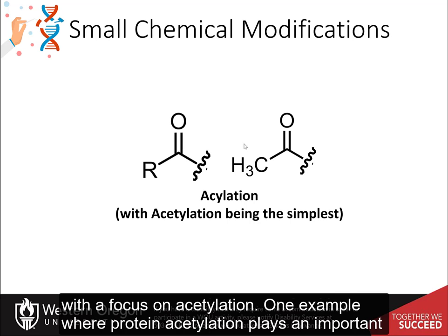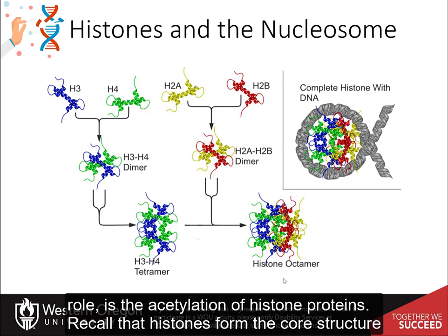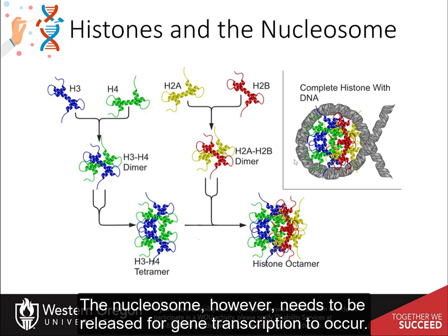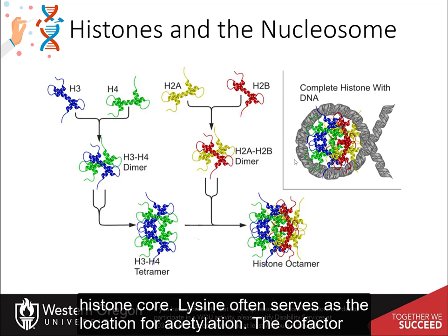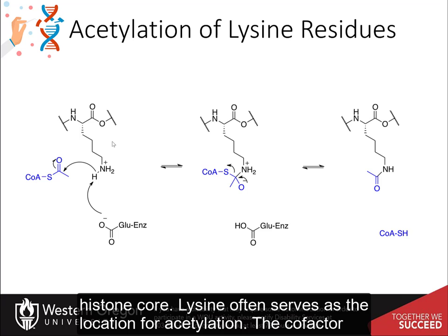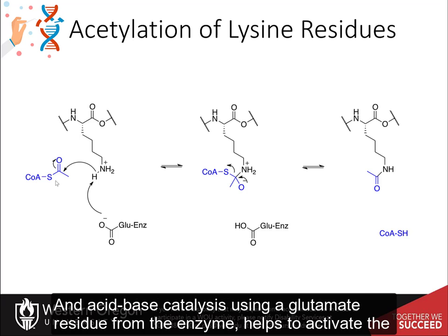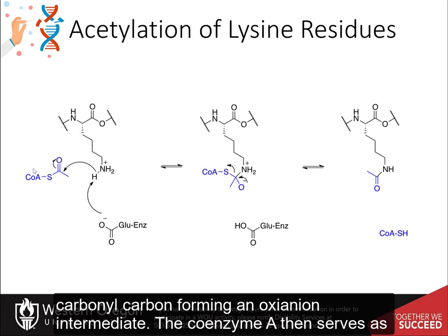One example where protein acetylation plays an important role is the acetylation of histone proteins. Histones form the core structure used to create the nucleosome in chromosome formation, but the nucleosome needs to be released for gene transcription to occur. This is facilitated by the acetylation of histones, which disrupts DNA binding with the histone core. Lysine often serves as the acetylation site, with coenzyme A serving as the source of the acetyl group. Acid-base catalysis using a glutamate residue activates the lysine amine, which then acts as a nucleophile to attack the carbonyl carbon, forming an oxyanion intermediate, with coenzyme A as the leaving group.